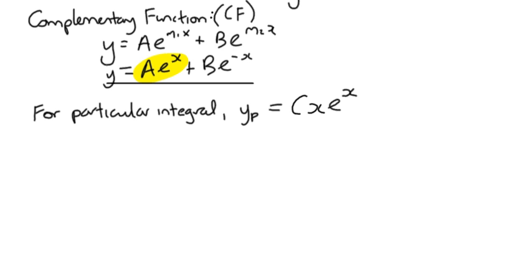Any power of x would effectively be a valid solution. In more complex problems, if Ae^x and Cxe^x were both already taken, we could introduce x²e^x and so on. But in our situation we only need to add one x term, so we can go ahead and differentiate accordingly.